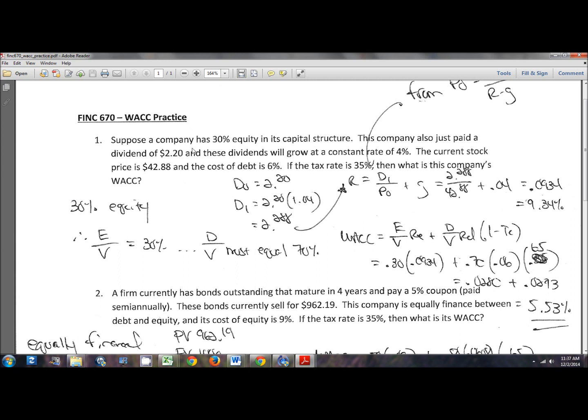So number one, suppose a company has 30% equity in its capital structure. So the first thing you want to recognize there is this information right here. That is giving you E over V. So E over V is 30%. So if E over V is 30%, that means that D over V must equal 70% because together they must equal 100%.